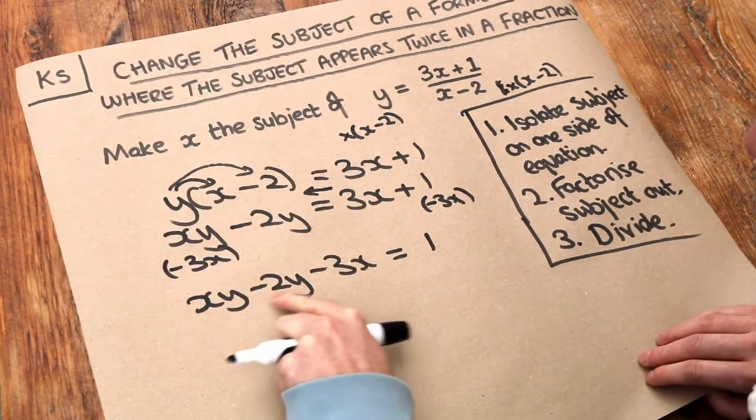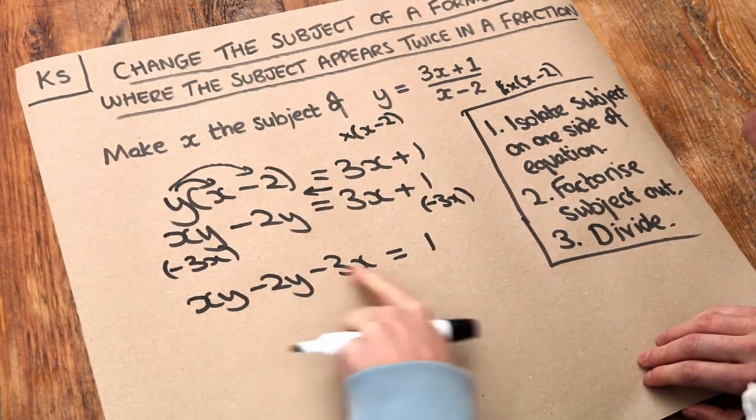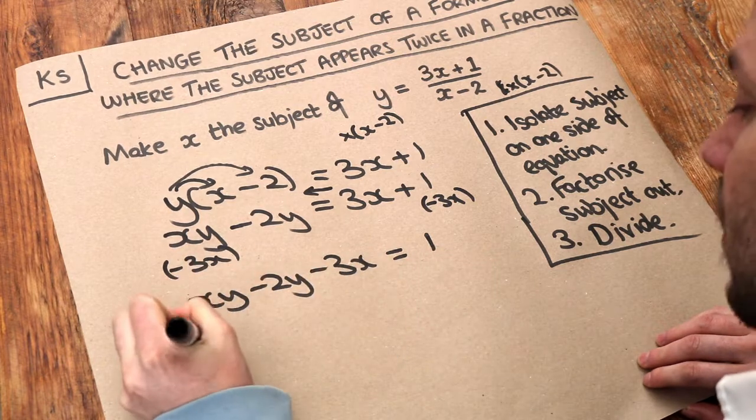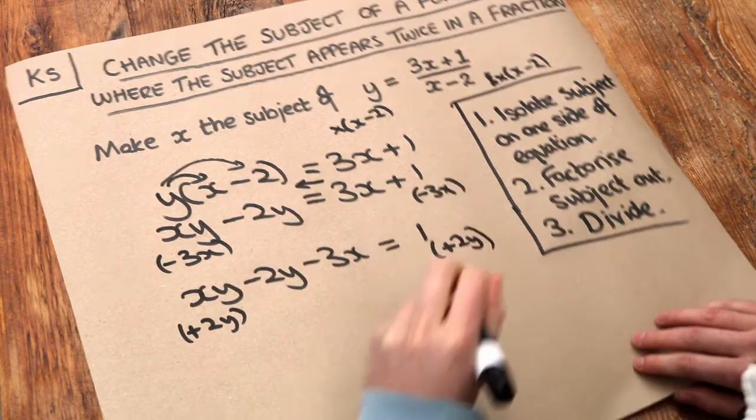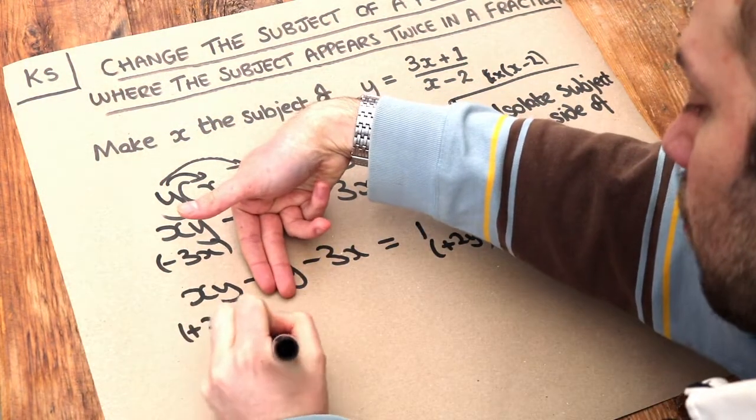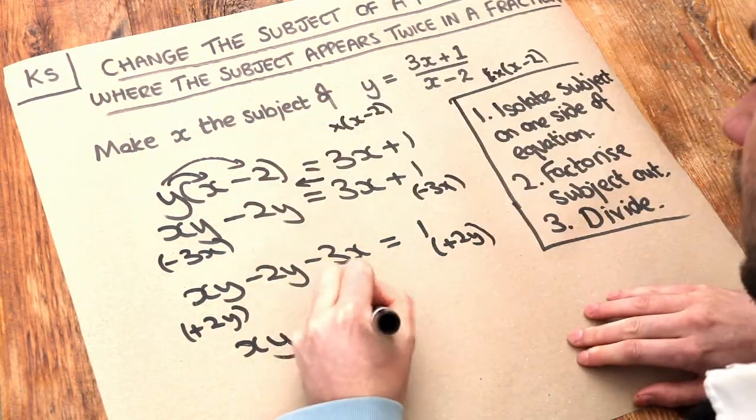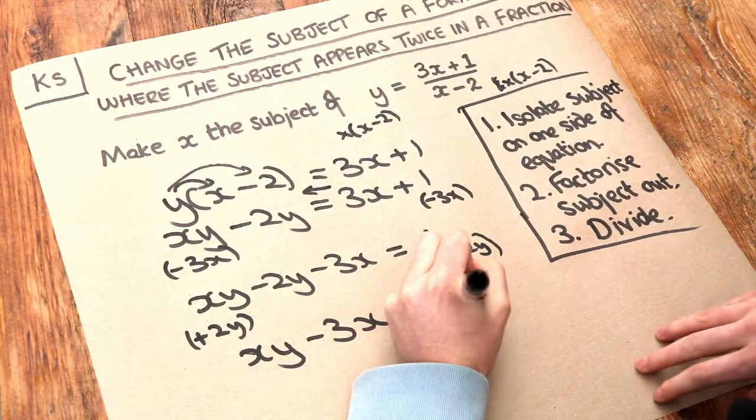And then this minus 2y here is not an x term. And we only want x terms on the left-hand side. So we're going to add 2y to get rid of it. So adding 2y gets rid of that, leaving just xy minus 3x. And we've added that 2y to the right-hand side.